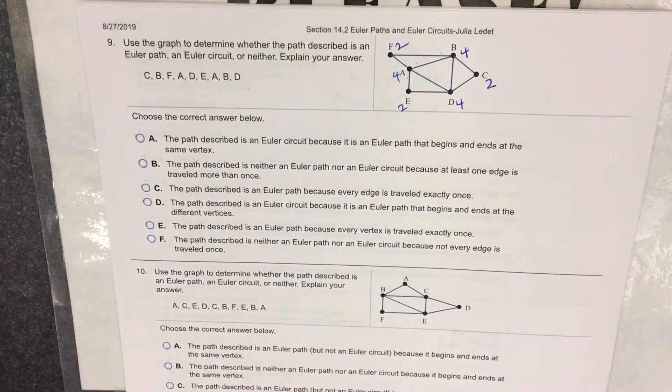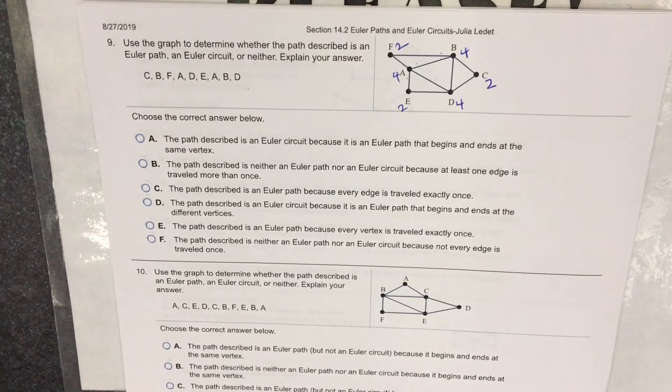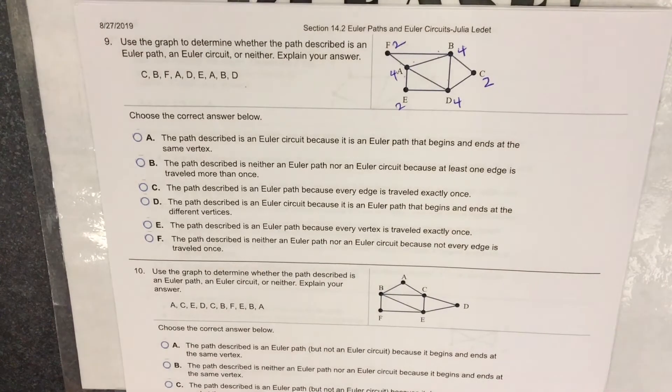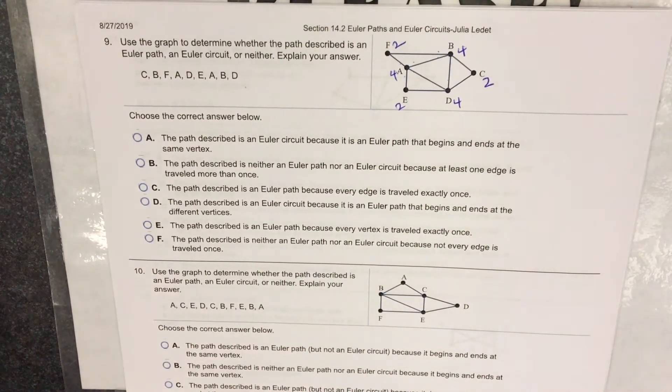With Euler's theorem, this tells me that the graph has an Euler circuit. But here's the question. Is this string of letters an Euler path or an Euler circuit?